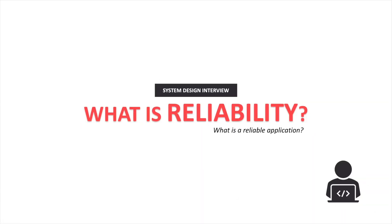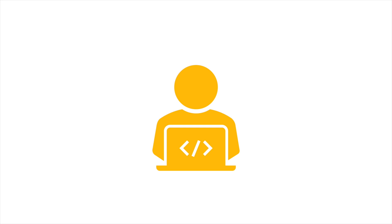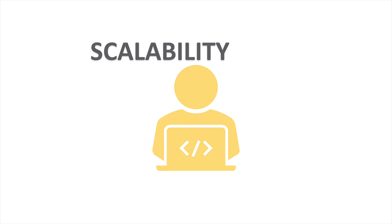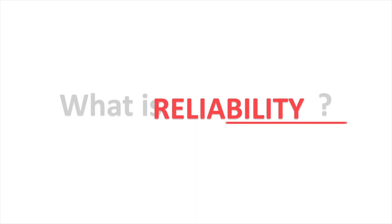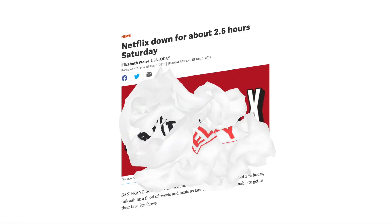Hey guys, welcome to another video of Into Teen Studio. When you're building a software application or service, I'm sure you've heard these big words everyone talks about: scalability, maintainability, and reliability. Everyone just throws these words at each other without really knowing what the individual terms actually mean. Today we'll tackle what reliability really means in depth, so you don't freeze when an interviewer asks you something like: how do you make a reliable application? Let's start by looking at some examples of unreliable services.